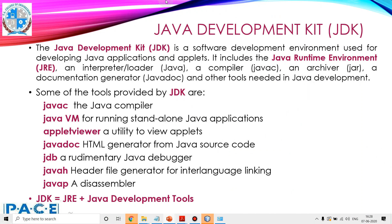The JDK tools include: javac — the Java compiler; Java VM — the virtual machine for running standalone Java applications; appletviewer — a utility to view applets; javadoc — an HTML generator that generates documentation from the Java source code; JDB — a rudimentary Java debugger; javah — a header file generator for inter-language linking; and javap — a disassembler.